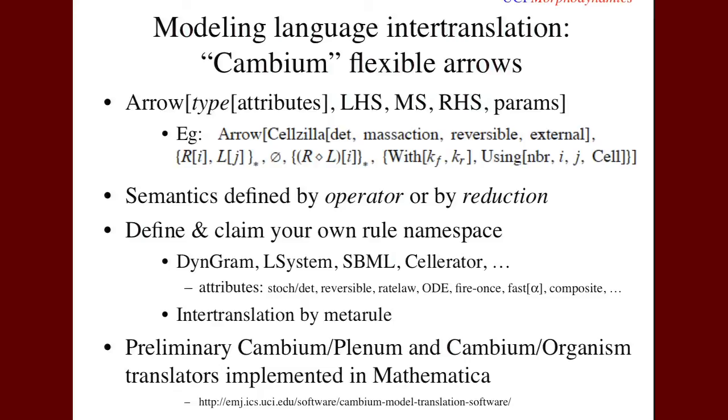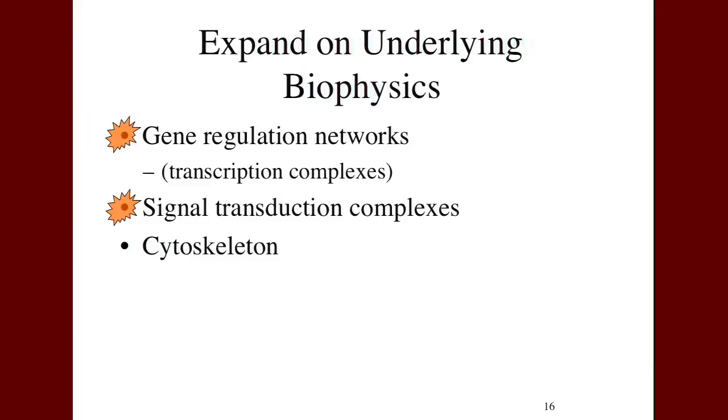Another thing you can do with this kind of declarative model, a modeling language where you have arrows that take from a left-hand side to a right-hand side, is you could translate between different languages that all have this sort of declarative characteristic. You could translate between Cellzilla and plenum, or between these languages in an L system, for example, by having sort of a generic notation that has features that are specific to each language that you're trying to translate. And we've prototyped this in a package called cambium that lets you translate back and forth between plenum and another C++ code that was used in the plant project called organism. And it just required changing the input format, making it a little bit more general for organism in order to create this translation.